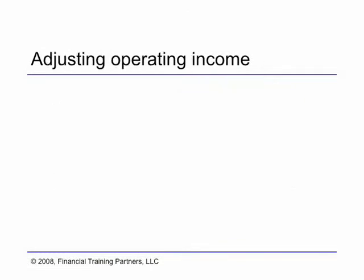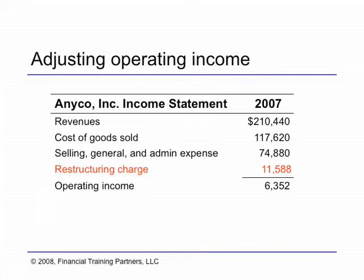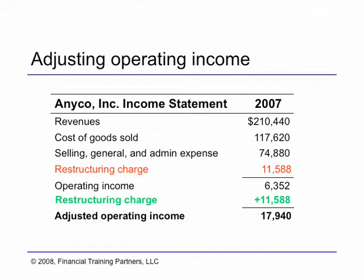We need to look at operating income without the effect of the charge. By adding the restructuring charge back to NECO's reported operating income, we get an adjusted operating income of $17,940,000 — a better measure of NECO's sustainable results.